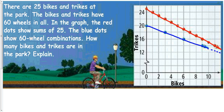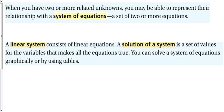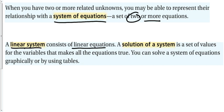When you have two or more related unknowns, you can represent the relationship with a system of equations — a set of two or more equations. If we have two variables, we need two equations to solve the system. For three variables, we need three equations, and so on. We're focusing on linear systems, and the solution is a set of values for the variables that makes all equations true — not just one, but every equation in the system.